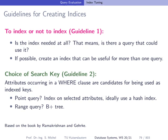Guideline 2: choice of search key. How do you find the suitable key over which to create the index? Look at the WHERE clause of your SQL query to see which attributes are used. Then see how they are used — is it a point query or a range query? If it's a point query, you can use a hash index. If it's a range query, hash indices don't support them, so you have to use a B+ tree.